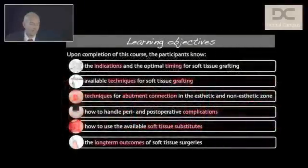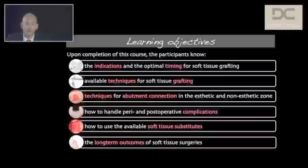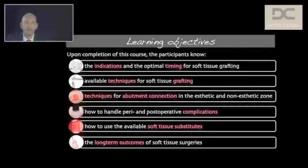The learning objectives of the course include focusing on the indications and the optimal timing for soft tissue grafting procedures. We look at the available techniques, their scientific evidence, and techniques for abutment connection in the aesthetic but also in the non-aesthetic zone. We also focus on handling peri- and postoperative complications, how to use available soft tissue substitutes, and we'll provide data on long-term outcomes after soft tissue grafting procedures.